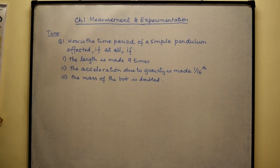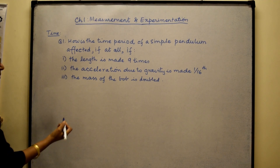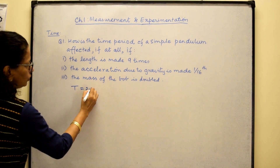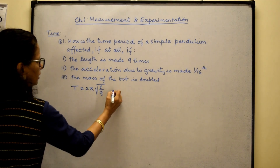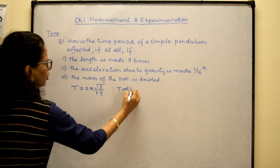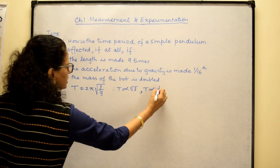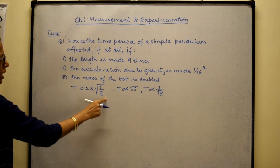Good morning. Welcome to class 9 ICSC Physics. We are still on chapter 1, Measurement and Experimentation, and this is the third video. We are now going to talk about the measurement of time. Remember there is a simple pendulum — you have already learned that in theory. The formula for the time period is T = 2π√(L/G). So the time period is directly proportional to the root of the length of the pendulum and inversely proportional to the root of gravitational acceleration.